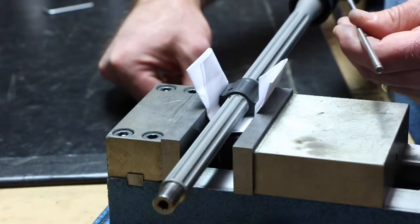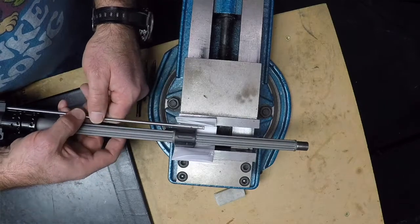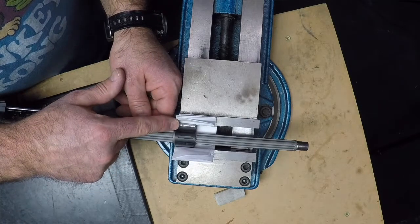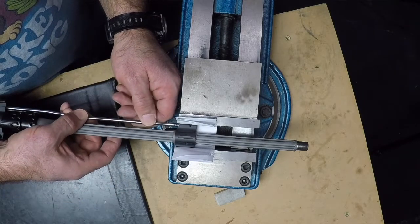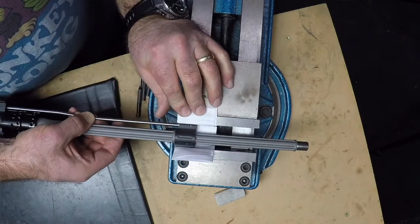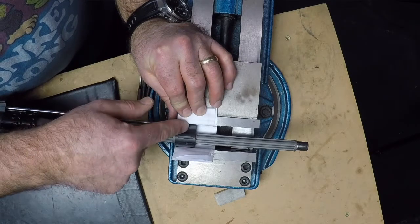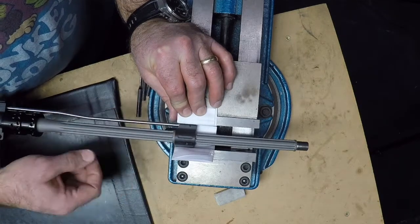But essentially, everything else, make sure you have the port towards the barrel. And then you just feed it in to where you can see the roll pin hole through that hole.